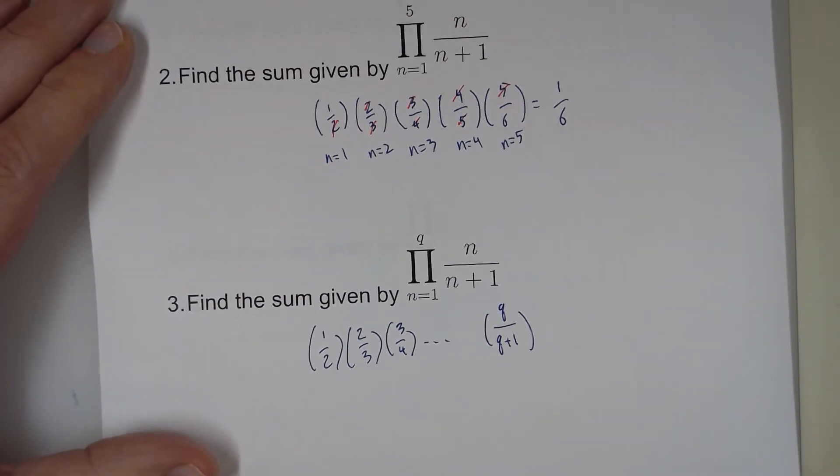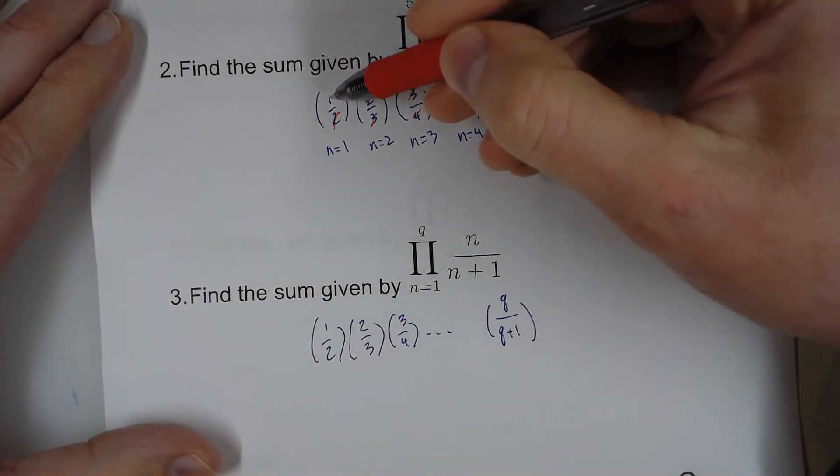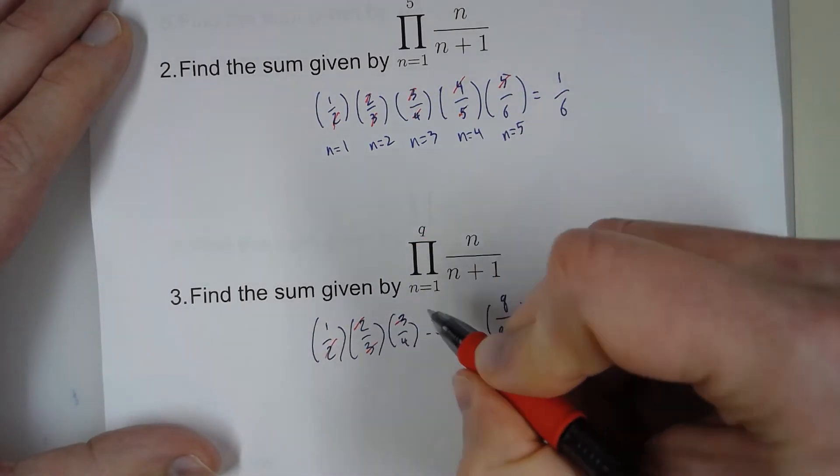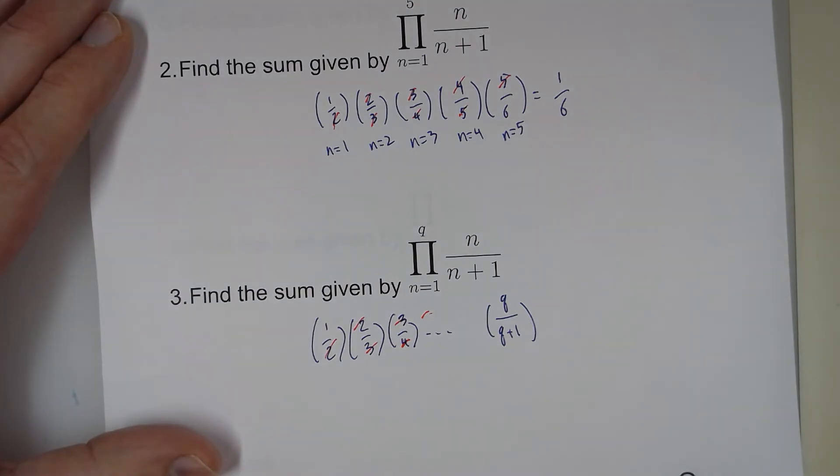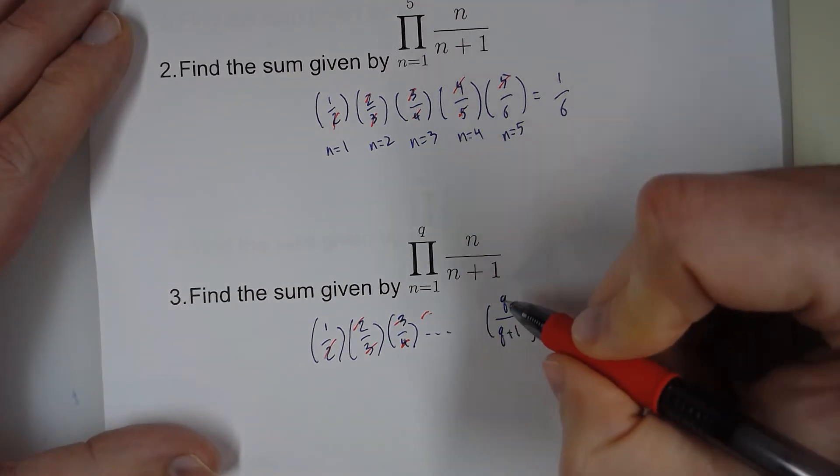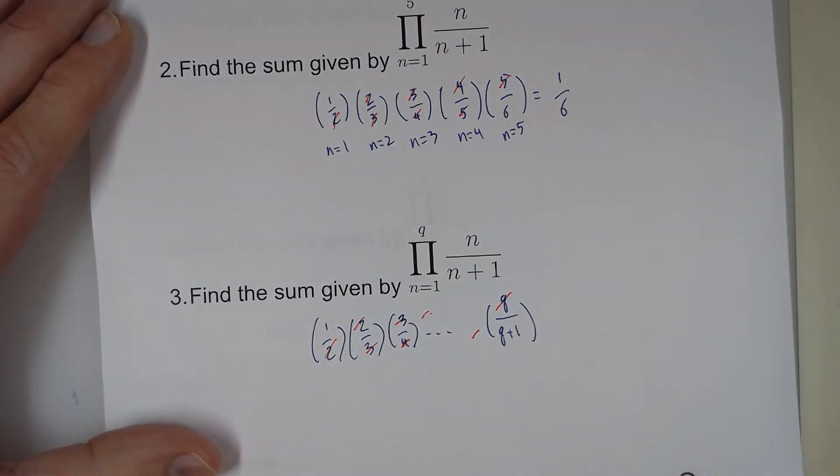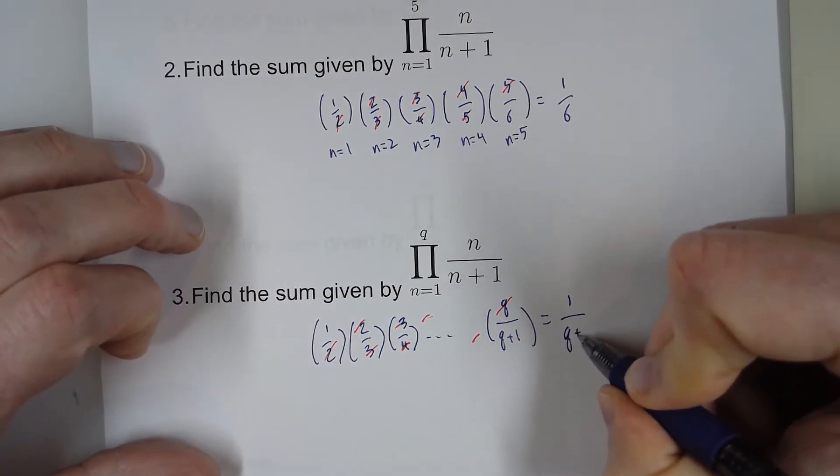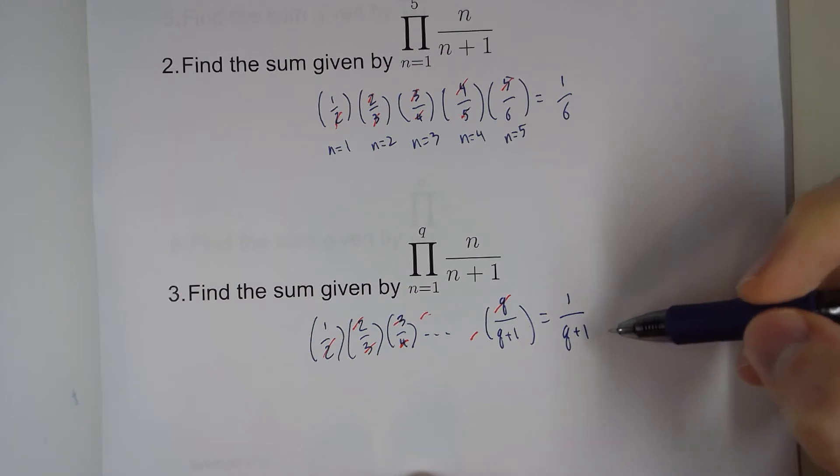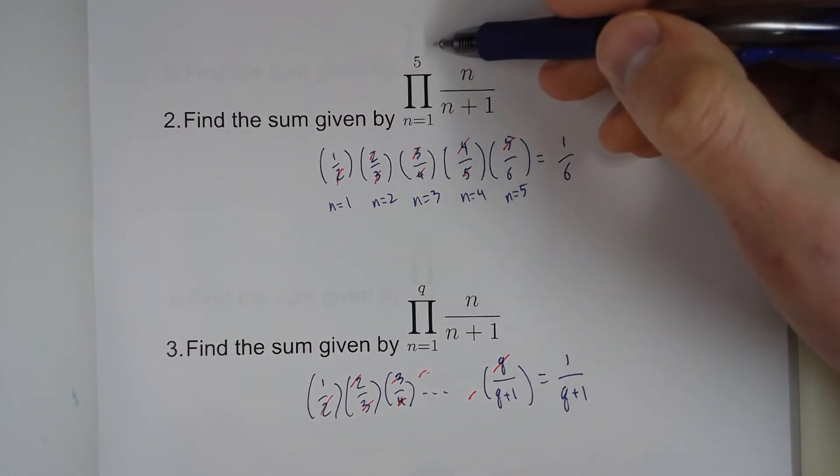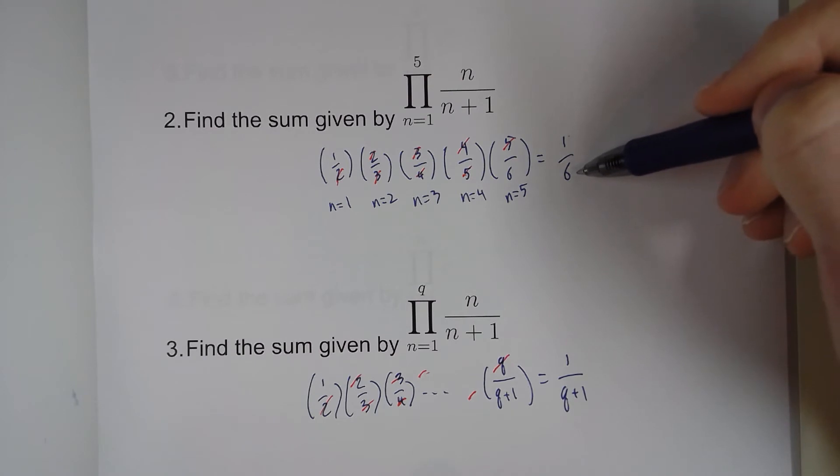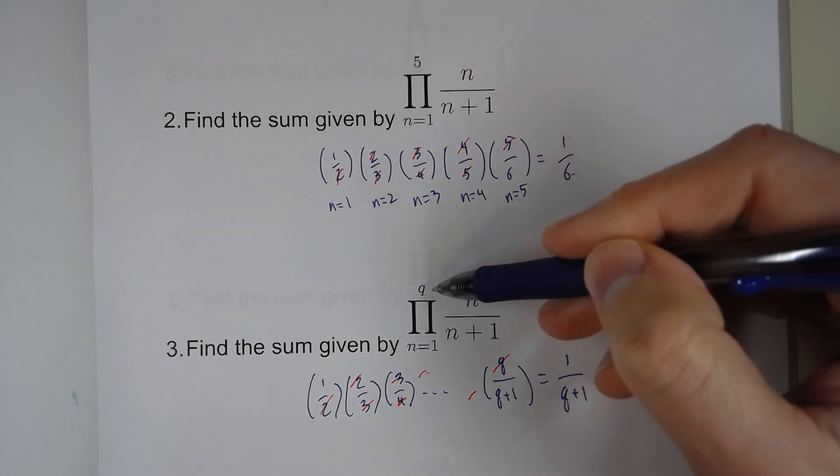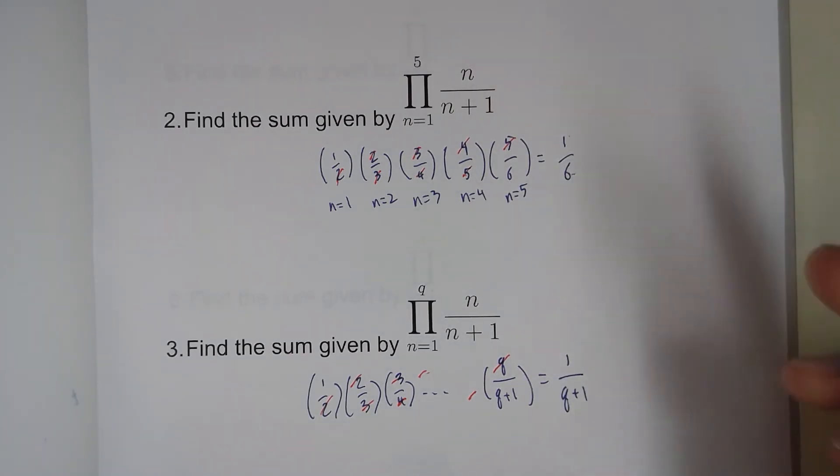Like number 3, everything is going to cancel except the 1 to start with and the denominator that ends it. So the 2s cancel, the 3s cancel, this 4 is going to cancel with that. This q in the numerator is going to cancel with whatever is down here. So we'll be left with 1 over q plus 1, which fits as a rule because we plugged in 1 through 5 and ended up with 1 over 6. We are going to end on q and our denominator will be q plus 1.